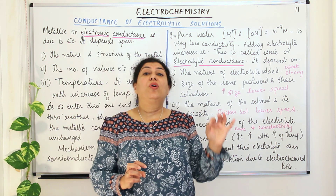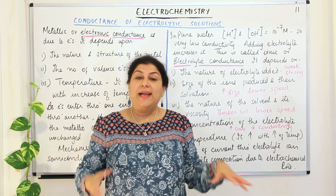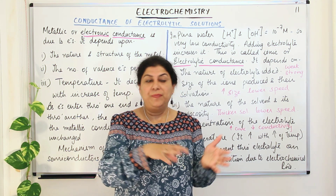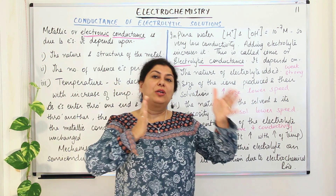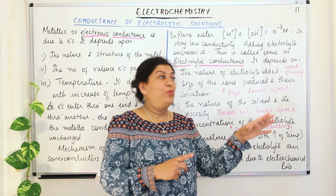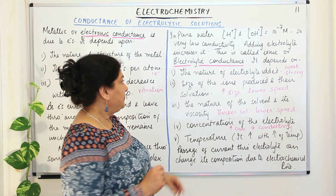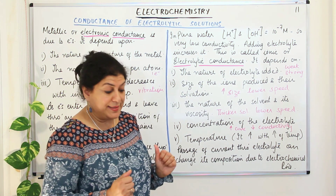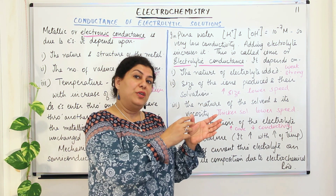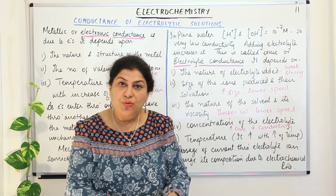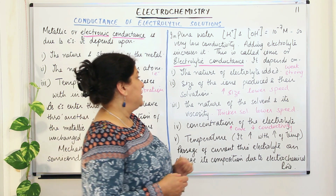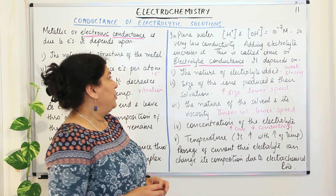Why do we call it electrolytic? Lysis means breaking down, and electro means electricity — so breaking down of a molecule due to electricity. When you added sodium chloride to the solution, the electricity caused the sodium and chloride ions to break apart — lysis of sodium and chloride ions took place. So we call it electrolytic conductance — conductance in which electrolysis took place. When electrolysis takes place, the nature of the substance changes. A neutral salt, when put into water, gets dissociated into positive and negative ions — a chemical change occurs.